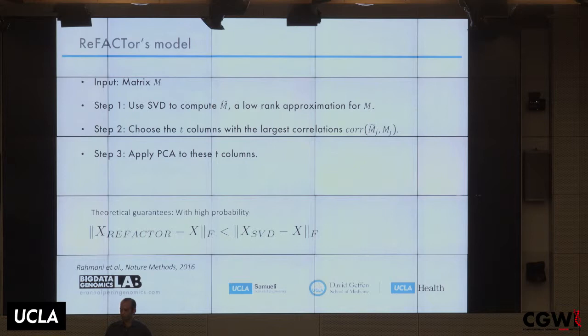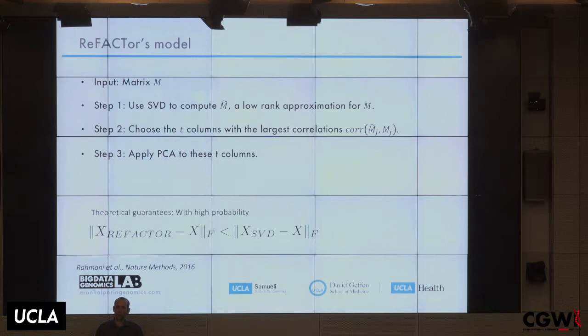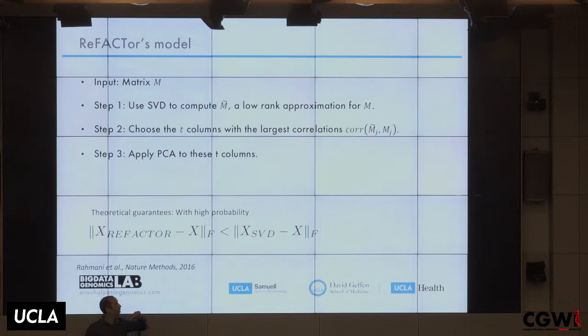The value of T can be chosen using cross-validation, but in practice we use biological knowledge about the typical number of methylation sites that differ between cell types. There are theoretical guarantees — this is not purely heuristic. Related to Johnson-Lindenstrauss-style sparse PCA, we show that our method, ReFACTor, gives a closer approximation to the signal matrix in Frobenius norm terms than plain SVD does, with high probability.